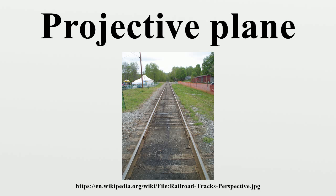In finite Desarguesian planes PG, Fano subplanes exist if and only if q is even. The situation in non-Desarguesian planes is unsettled. They could exist in any non-Desarguesian plane of order greater than six, and indeed they have been found in all non-Desarguesian planes in which they have been looked for. An open question is: does every non-Desarguesian plane contain a Fano subplane? A theorem states that if every quadrangle in a finite projective plane has collinear diagonal points, then the plane is Desarguesian.